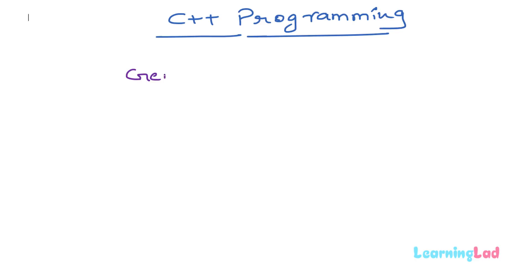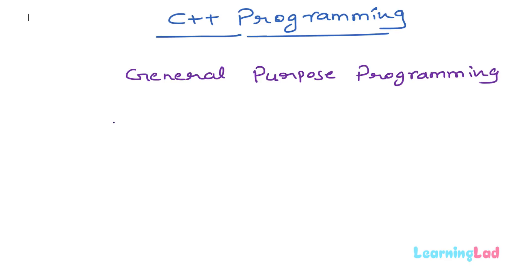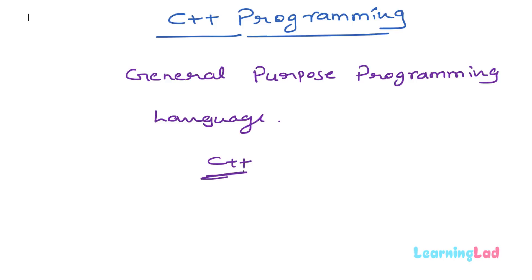First let's take a look at some of the terms used with the programming language. The first term is the general purpose programming language. A general purpose programming language is a language designed to be used for writing software in a wide variety of application domains. In simple words, it means that we can use that programming language to create different variety of applications. C++ is also a general purpose programming language, so you can use it for creating different types of software or programs.